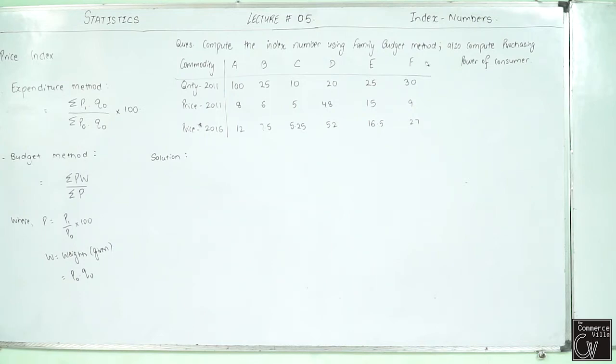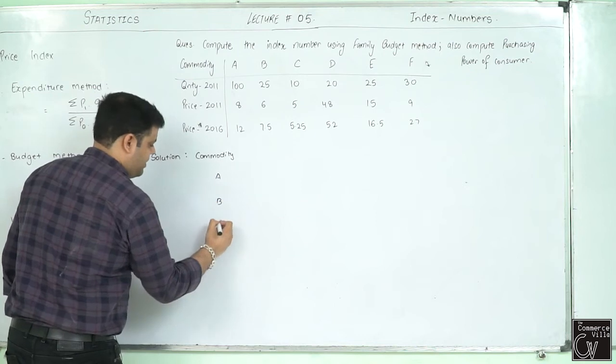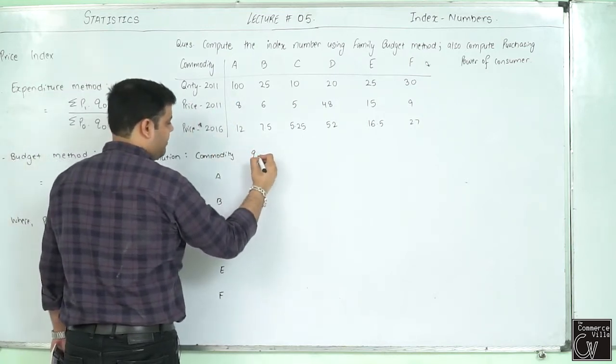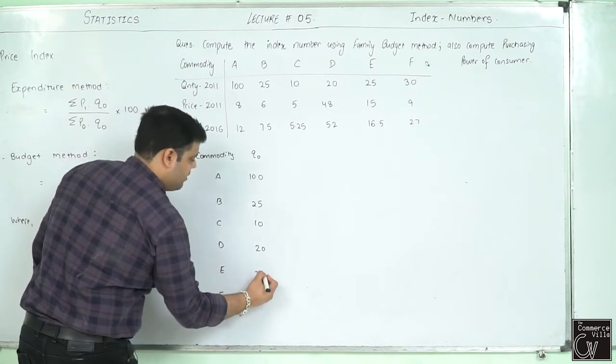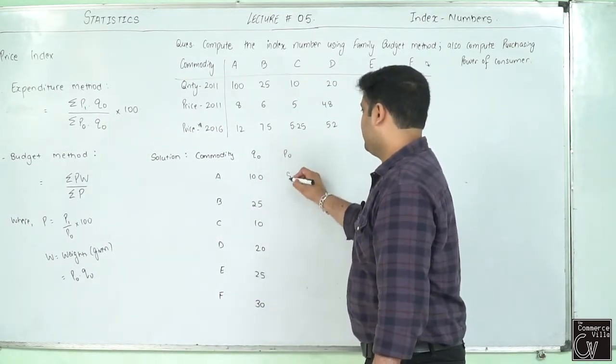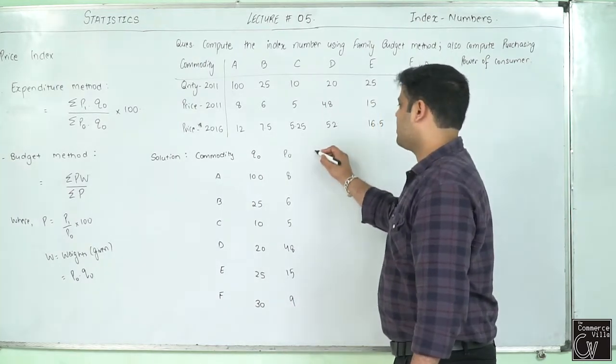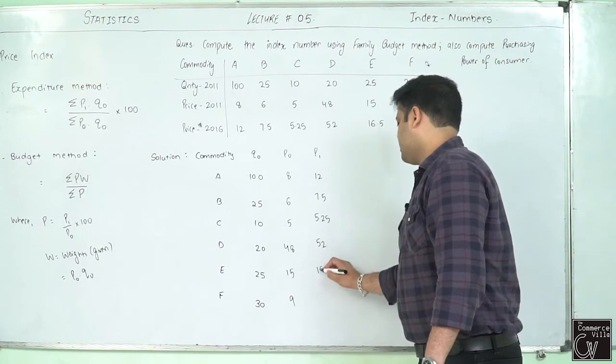Let us start. Commodity A, B, C, D, E, F. This is quantity in 2011, so it is Q0, base year quantity given. A is 100, 25, 10, 20, 25, 30. Prices in 2011, this is P0: 8, 6, 5, 48, 15, 9. Price in 2016, P1: 12, 7.5, 5.25, 52, 16.5 and 27.